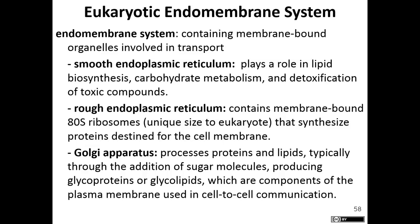The endomembrane system is a system of membrane-bound organelles that flow together, allowing for transport and production of materials. Part of it is the rough endoplasmic reticulum, which I mentioned earlier. There is also a smooth endoplasmic reticulum, which plays a role in lipid biosynthesis — producing testosterone or estrogens in human cells — and also functions in carbohydrate metabolism and detoxification of certain compounds.